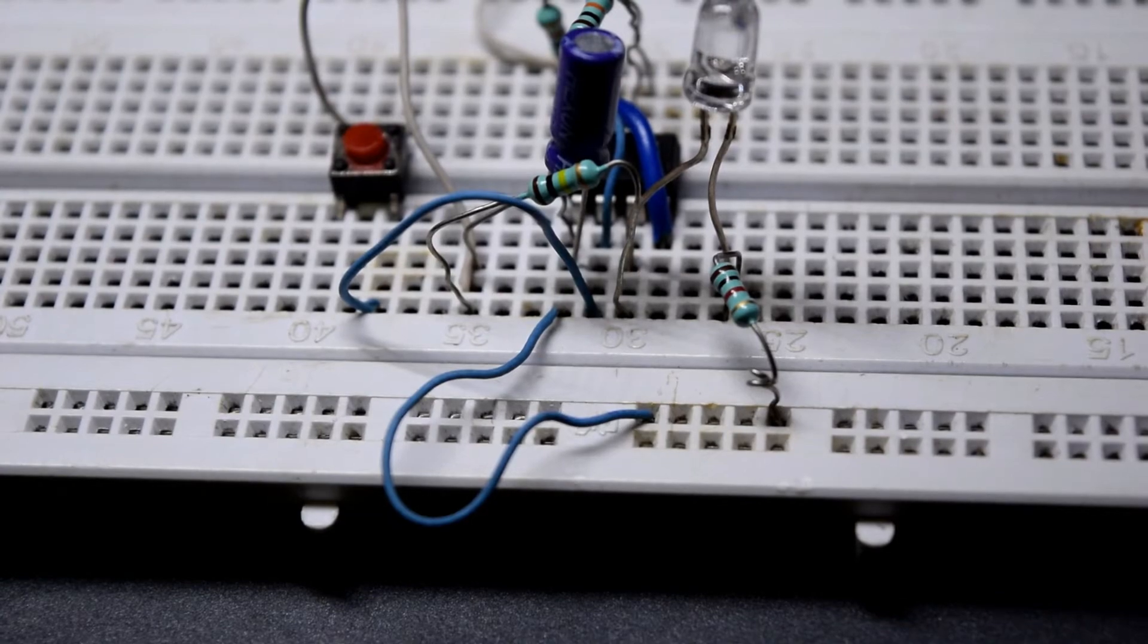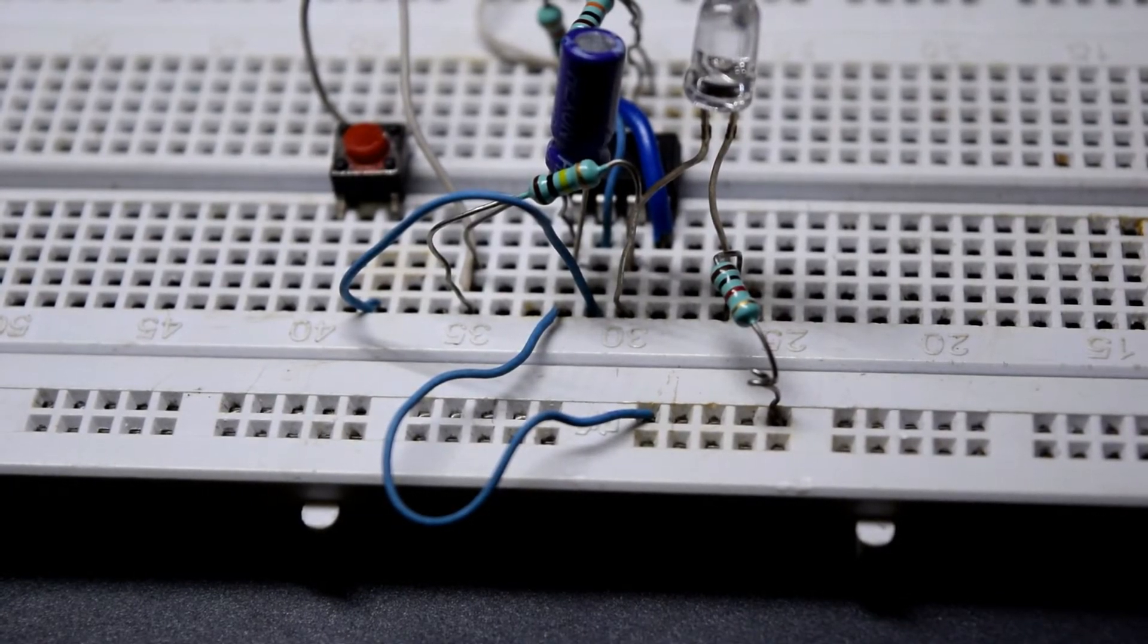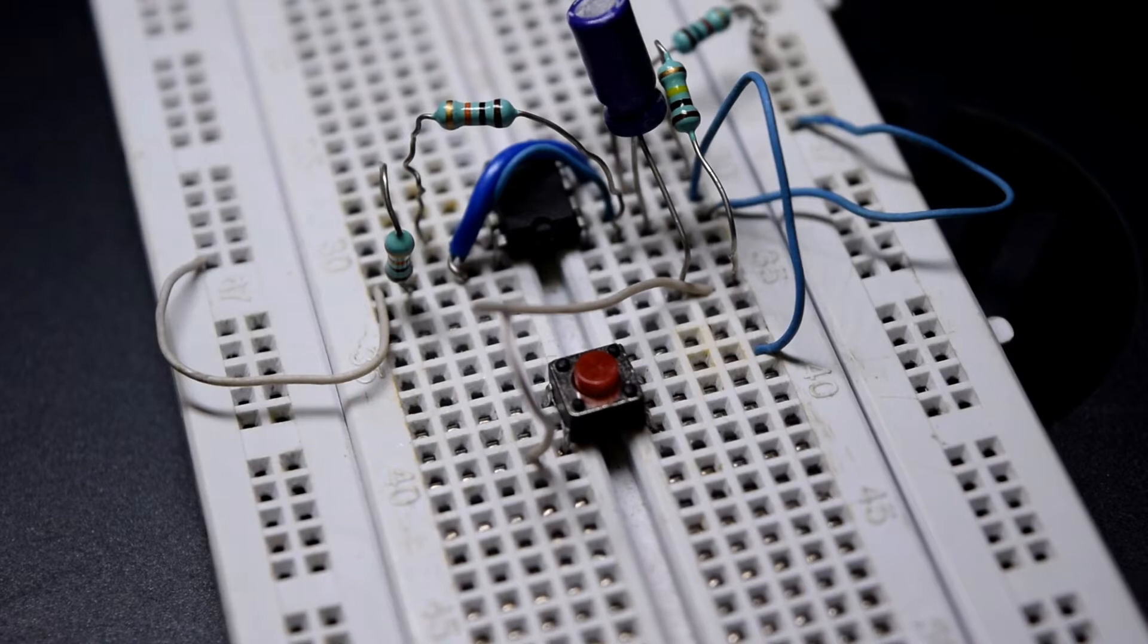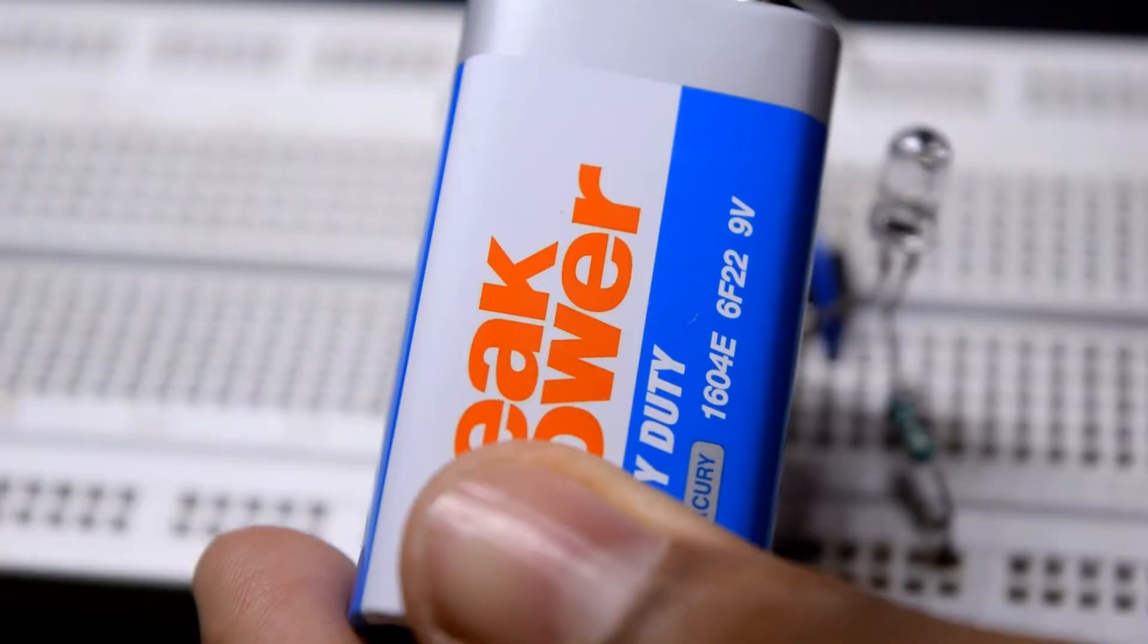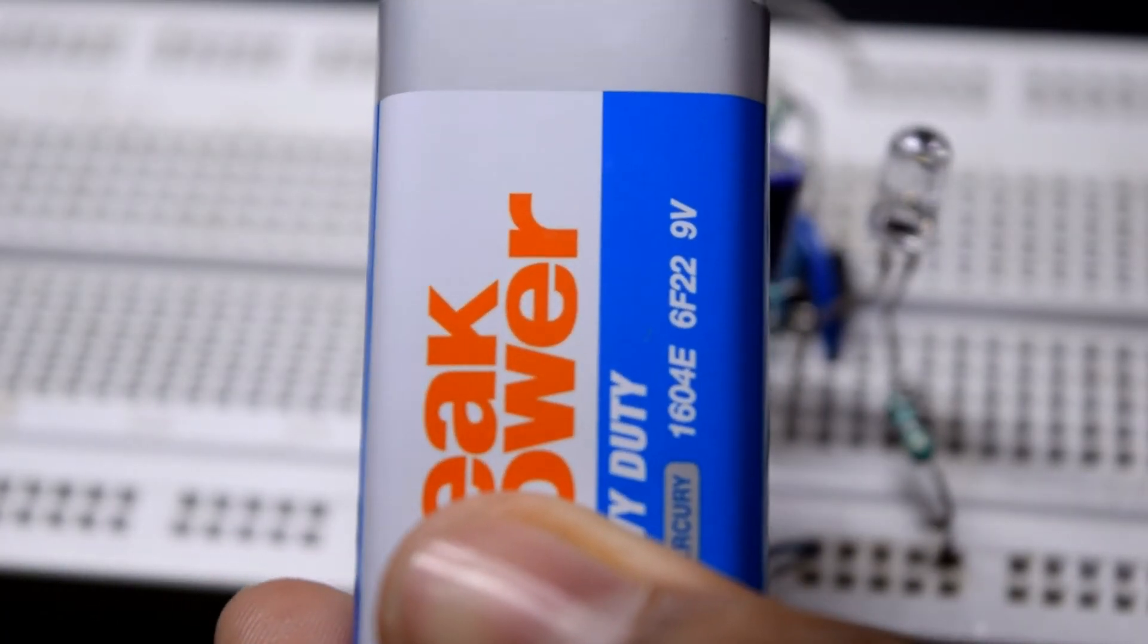Connect pin 1 of the IC to negative power supply and pin 8 of the IC to positive power supply. Give the power supply and your circuit will be ready.